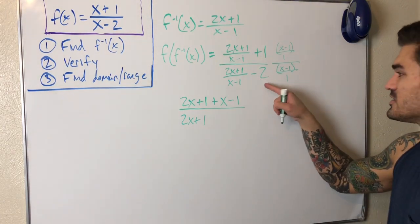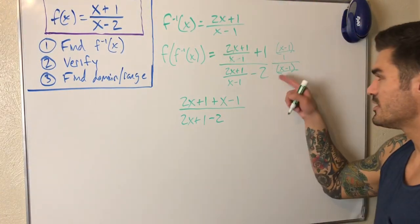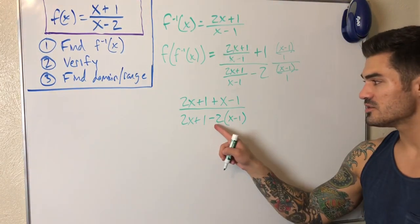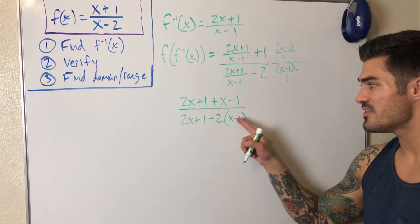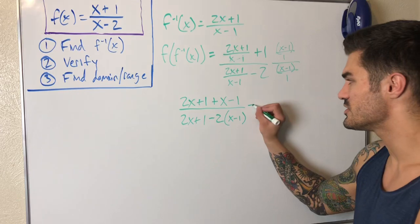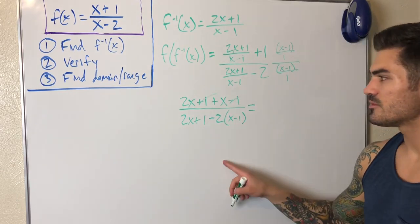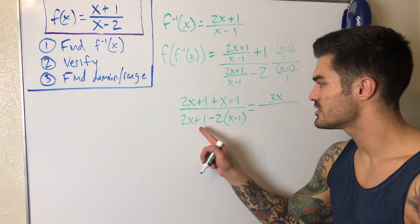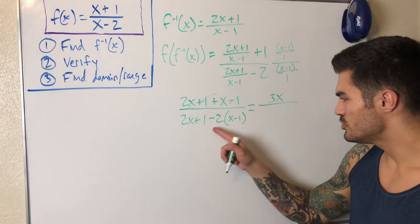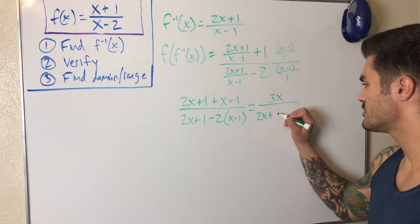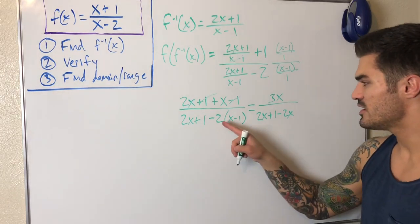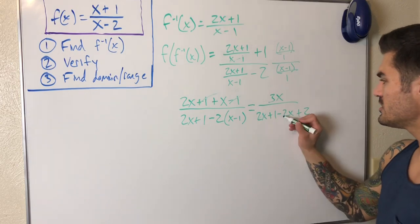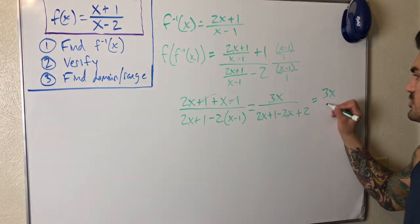On the bottom: (2x+1) - 2(x-1). Careful with the algebra — distributing the -2: that's 2x + 1 - 2x + 2. On top: 2x + 1 + x - 1 = 3x. On the bottom: 2x - 2x cancels, leaving 1 + 2 = 3. So we get 3x/3 = x. Verified in the first direction!